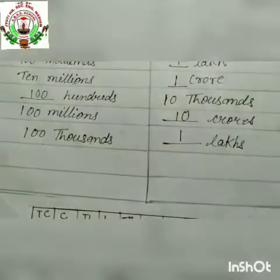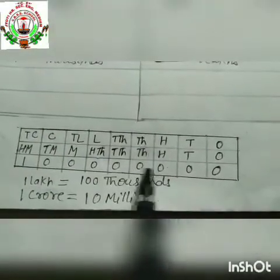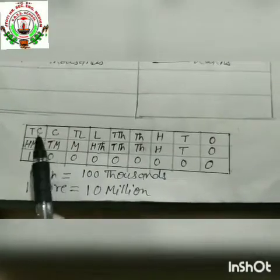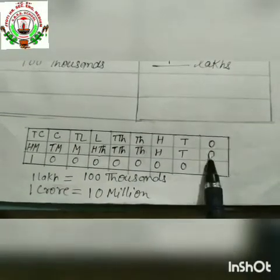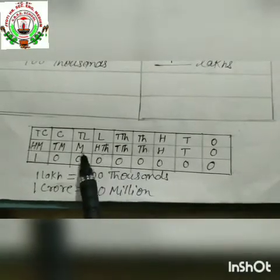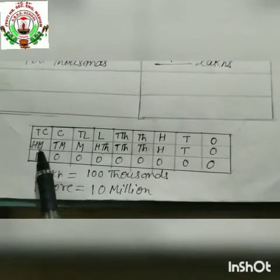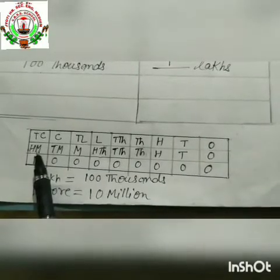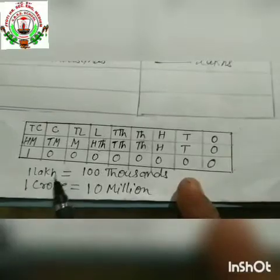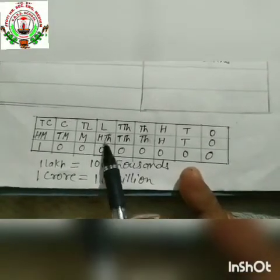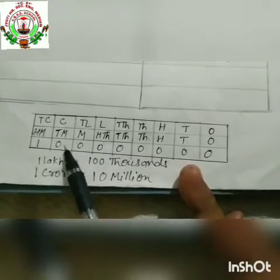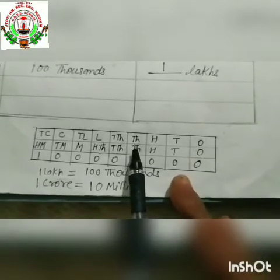Now here is a short table to compare both systems. In the Indian system: ones, tens, hundreds, thousands, ten thousand, lakh, ten lakh, crore, ten crore. In the international system: ones, tens, hundreds, thousands, ten thousand, hundred thousand, million, ten million, hundred million. From this table we can observe that one lakh is equal to hundred thousand, and one crore is equal to ten million. We have now understood the comparison of both systems.